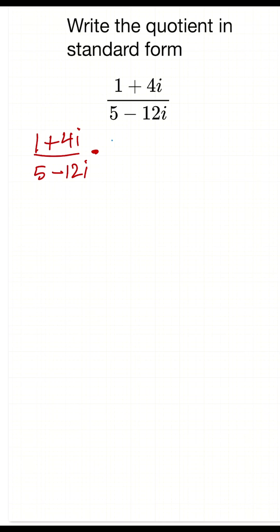So that's going to be 1 plus 4i times 5 plus 12i, because we do the complex conjugate. We just change the sign in front of the imaginary part. So that's 5 minus 12i times 5 plus 12i.